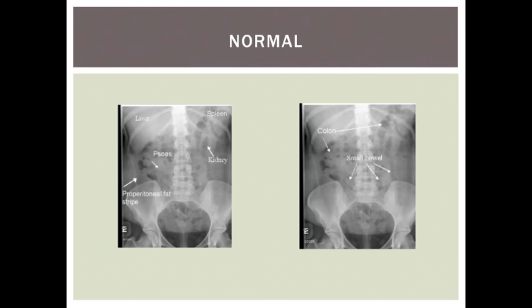The labelled examples of normal x-rays show you the position of most of the intra-abdominal structures. You can see air within the bowel which shows up black, with denser structures such as the liver and bones showing up white. It is important to remember how much bone can be seen on abdominal x-rays, as it is not uncommon to diagnose a crush fracture of the vertebrae or a fractured neck of femur unexpectedly on an abdominal film.